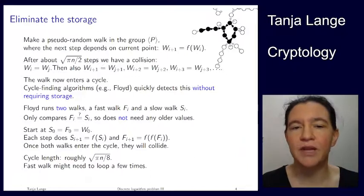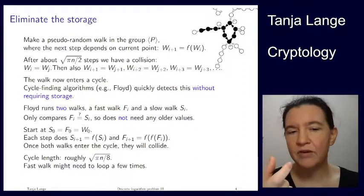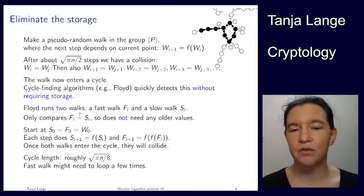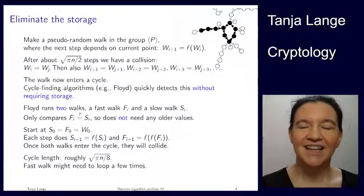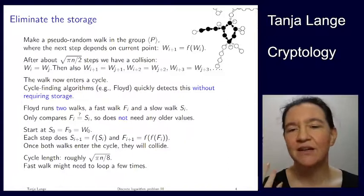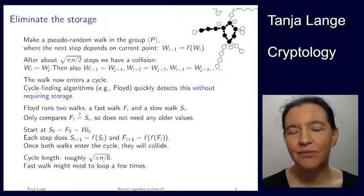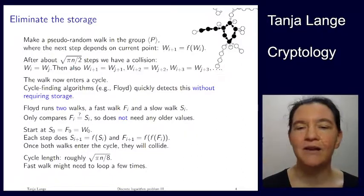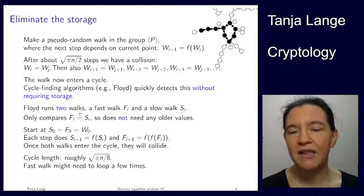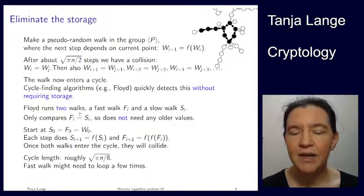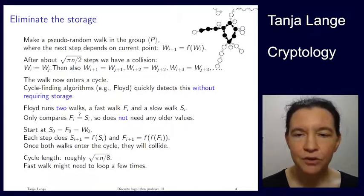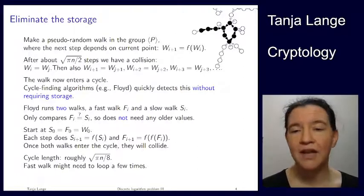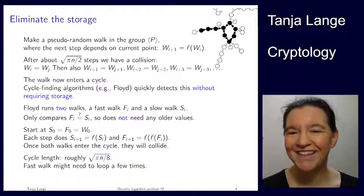And the only space we need to allocate is one group element for the fast walk, one group element for the slow walk. So there's no extra storage involved. And this means that we're getting a storage free algorithm without actually having to pay anything for the computation. So also for this one, if we can figure out how to do this function f in anything that is a reasonable time, then we will actually have another square root of the group order algorithm without the hassle of having storage. Now it's really the end. Thank you.